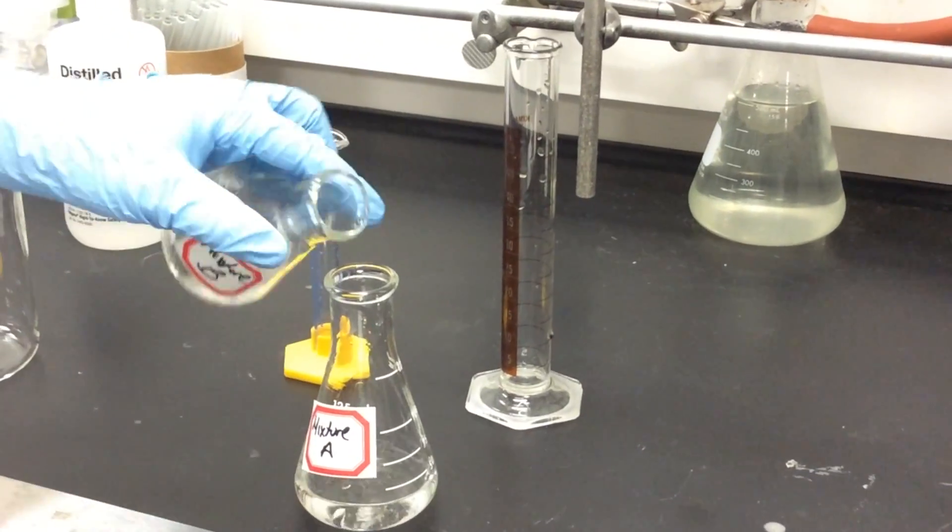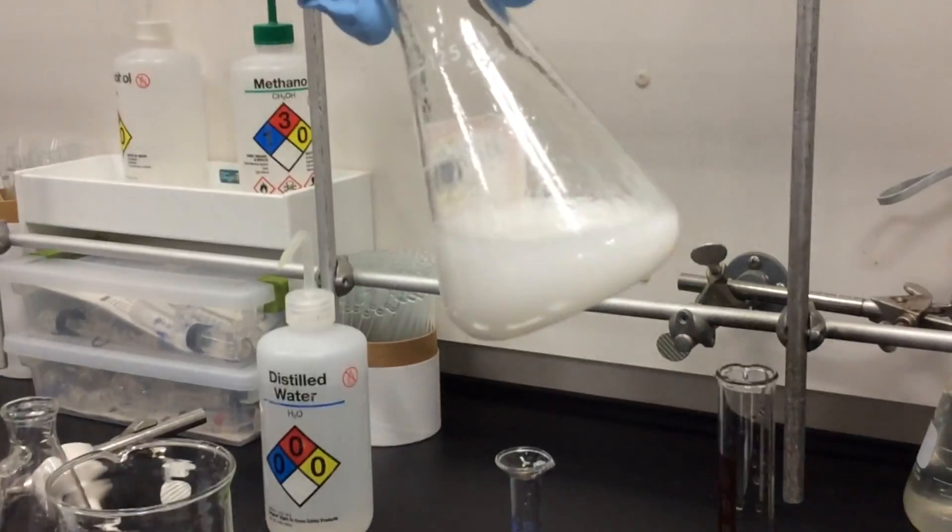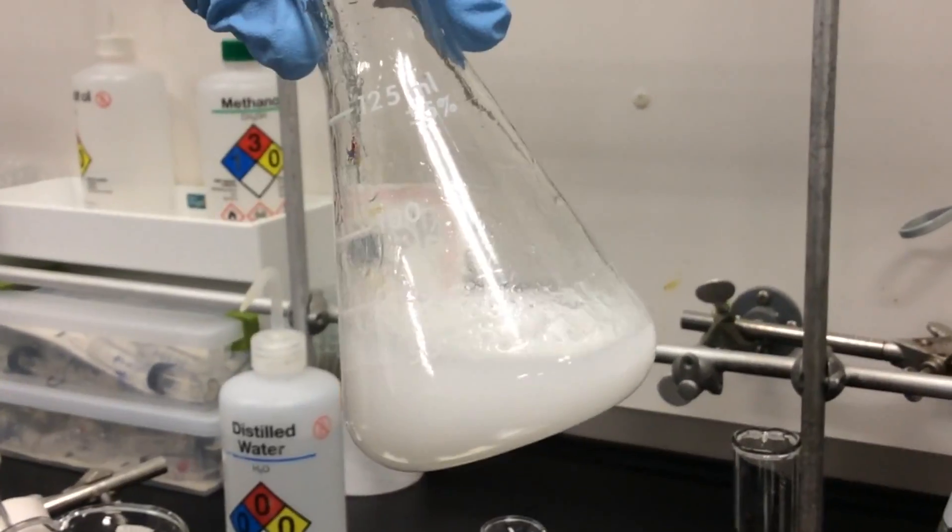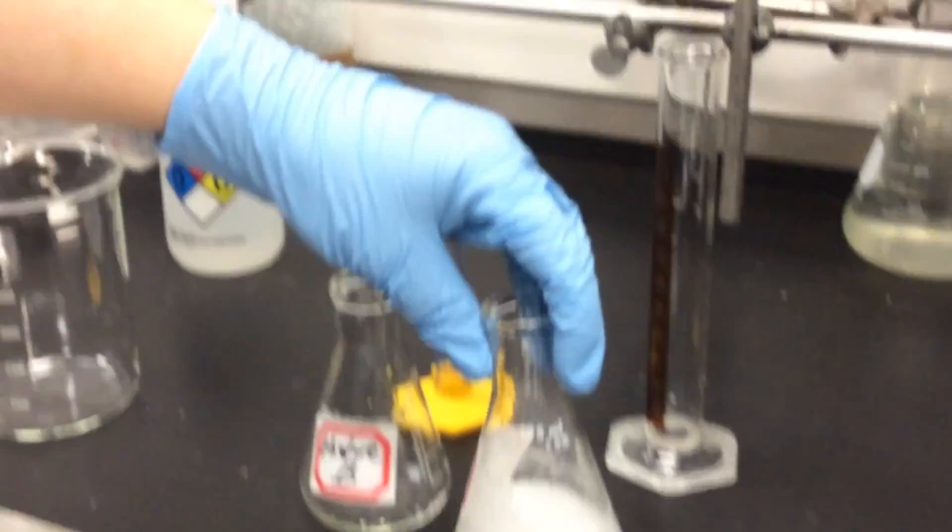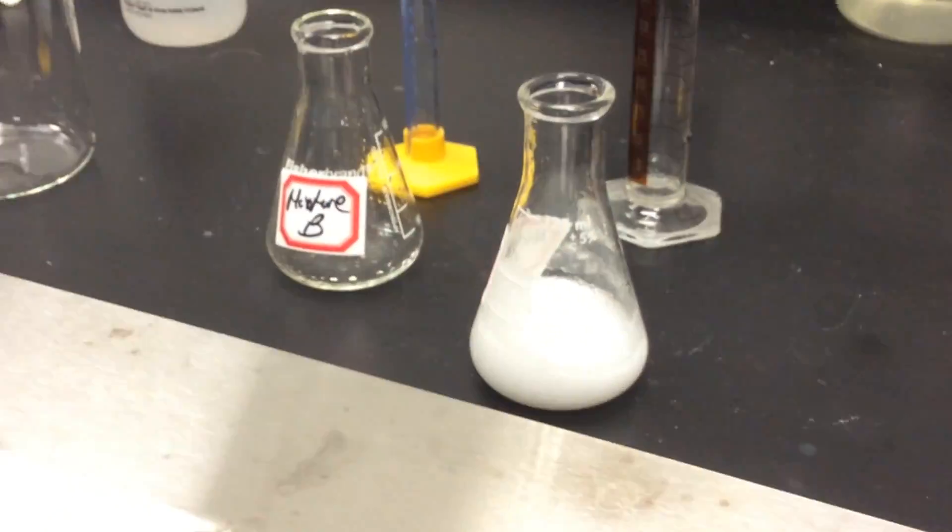Now we swirl both flasks, pour mixture B into mixture A, take the mixture A flask, and as you can see immediately white crystals are starting to form. This is actually our product, our acid anilide, which we have now synthesized.